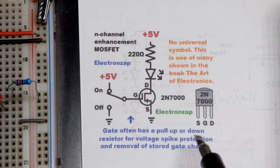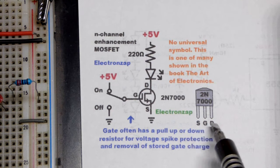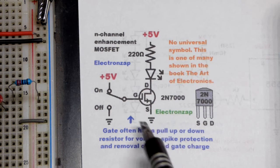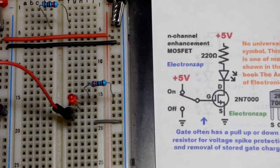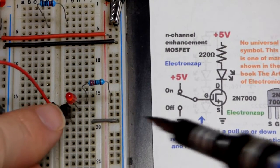But in this case it's not collector base emitter, it's source gate drain. So we have the component there to line this up on the breadboard. I have it facing to the right.